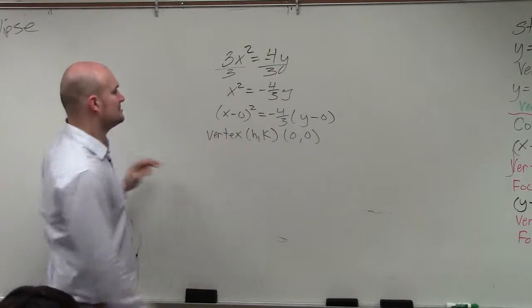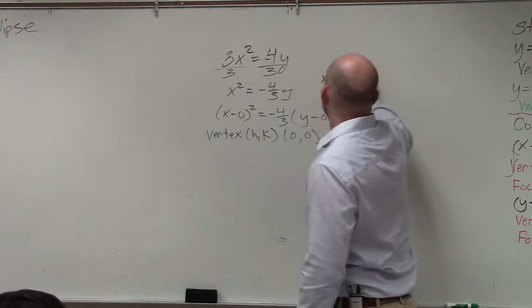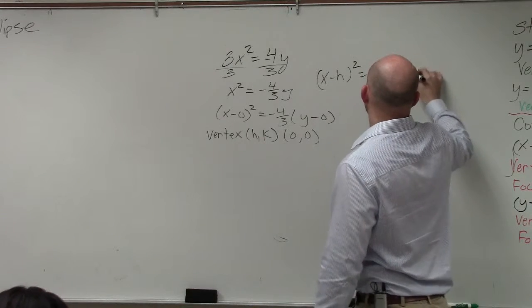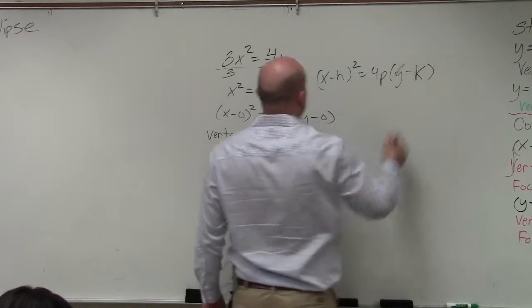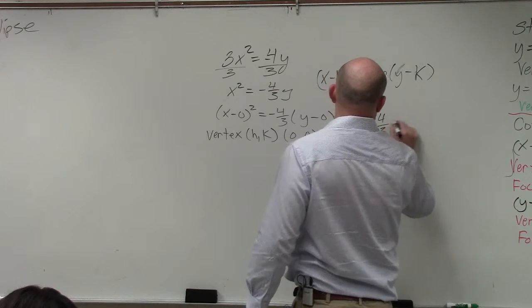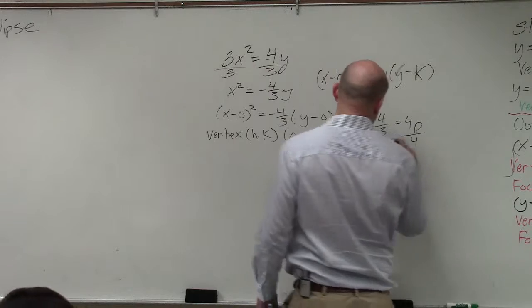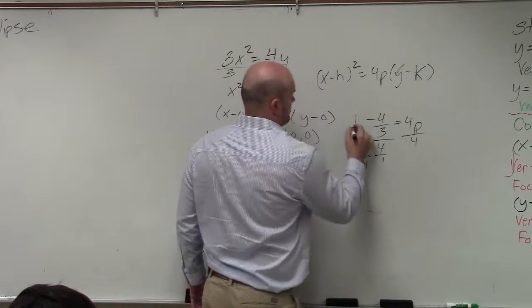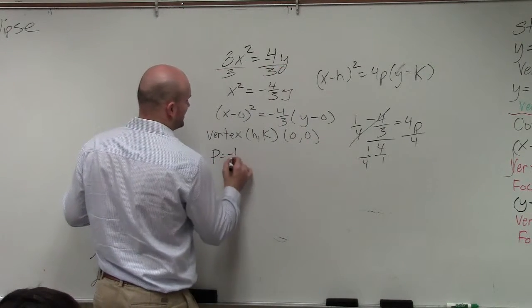We need to figure out the value of p. So we know that from our general formula that x minus h squared equals 4p times y minus k. So therefore we know that negative 4 thirds is equal to 4p. So to identify our value of p, I'm going to divide by 4 on both sides, so therefore p is equal to negative 1 third.